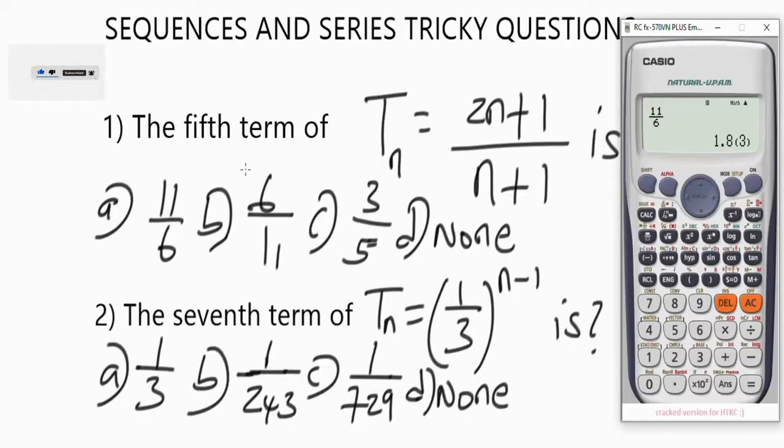It's as simple as that guys. Let's go to one more question so that you understand this better. The second question here says the seventh term of Tn equals (1/3) to the power (n - 1) is what. So let's go back to our Mode option 7, that's for table. F(x) equals—input the function. It's in brackets and also in fraction, so you're going to have 1 over 3, close the bracket, the power is—replace the n with x, very important—Alpha x minus 1.